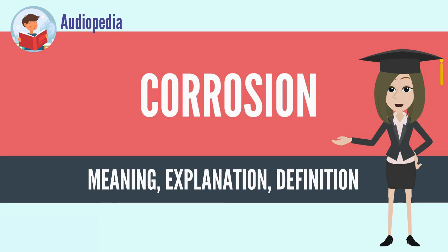In the most common use of the word, this means electrochemical oxidation of metal in reaction with an oxidant such as oxygen or sulfates. Rusting — the formation of iron oxides — is a well-known example of electrochemical corrosion.